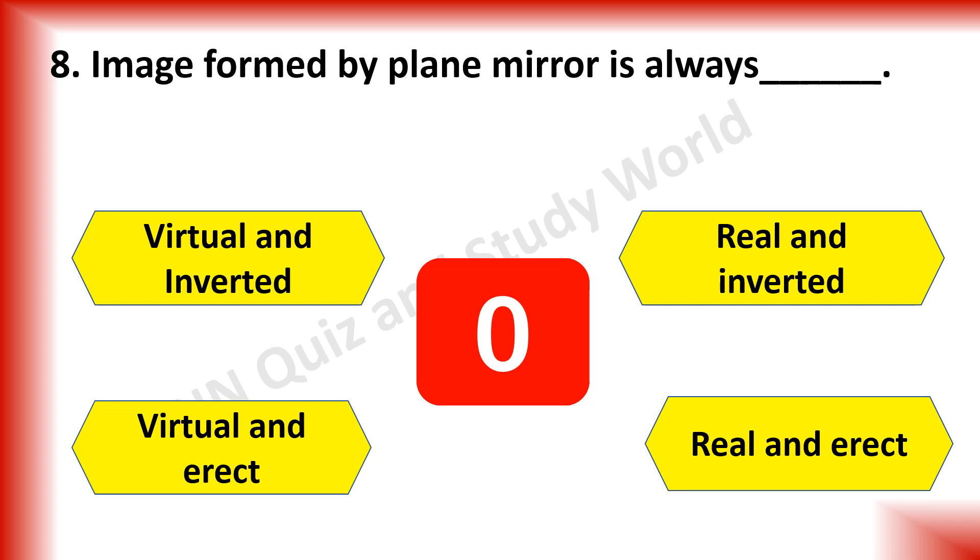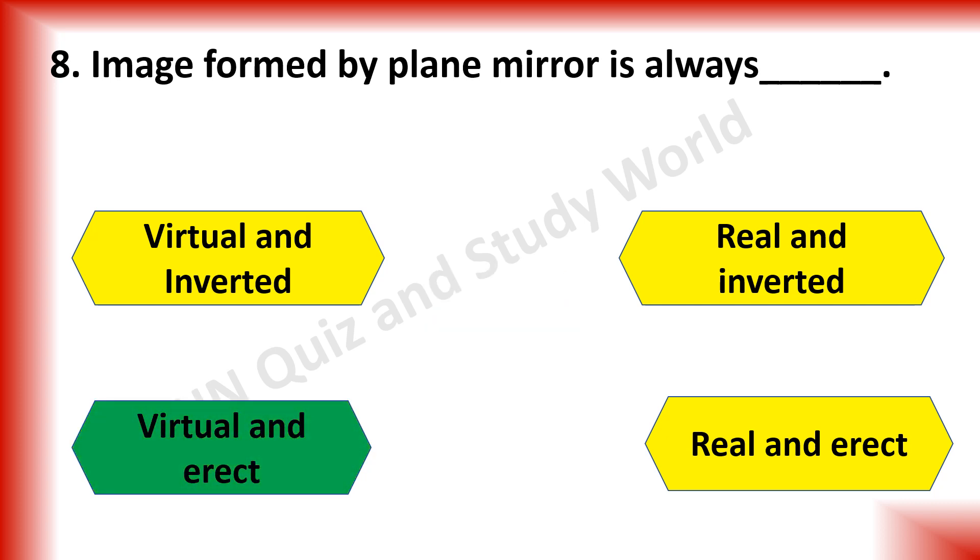An image formed by the plane mirror is always dash, virtual and inverted, real and inverted, virtual and erect or real and erect. The answer is virtual and erect.